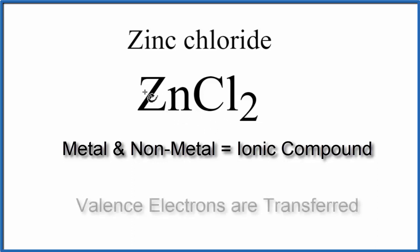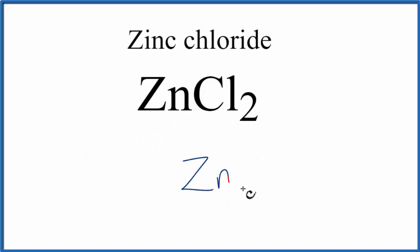In an ionic compound, the metal will transfer valence electrons to the nonmetal. So we'll write zinc in the center, and then the chlorine on each side, because we have two of those.